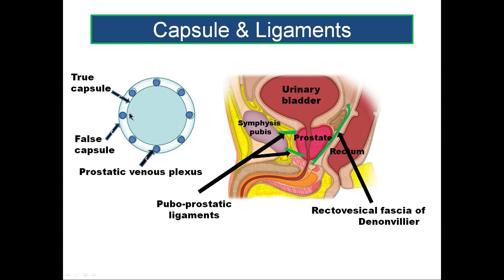The prostate is covered by a true capsule, which is the condensation of the stroma of the gland itself. Outer to this is a false capsule formed from the surrounding pelvic fascia and the fascial sheets of various organs related to the prostate. In between these two capsules you find a plexus of veins — the prostatic venous plexus — which is an important relation because this venous plexus lies between the true capsule and the false capsule.